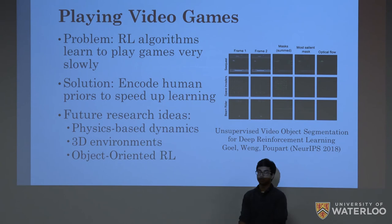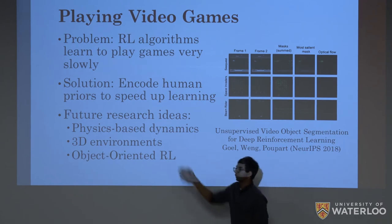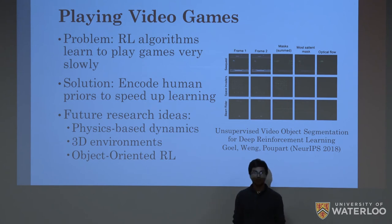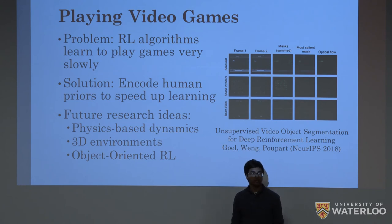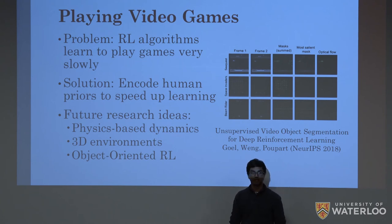Some future research ideas would be to add more and more priors that people already have when playing games. Some examples would be physics-based dynamics — if a ball hits a paddle, we know it's going to bounce; if it's moving straight, we know it'll keep moving straight. These things shouldn't require millions of frames for the AI to learn from scratch; we can just encode that into the model. Other things such as handling 3D environments are already being tackled by one of the students in this class. And there's the idea of object-oriented RL, where you explicitly reason about the different objects in the game and what they could mean for predicting the future. This is a really wide-open research area with a lot of different priors you can try putting into the model.